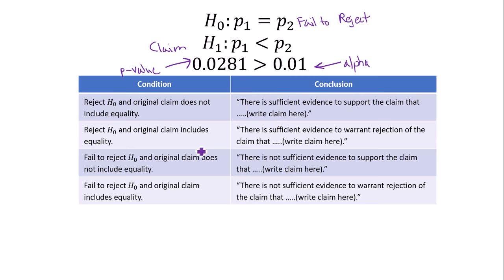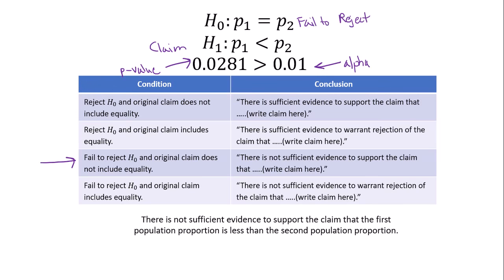So looking at our summary statement table, we failed to reject the null hypothesis. And our claim does not include inequality, which puts us in row 3. So this is the general format of our statement. So our statement is that there is not sufficient evidence to support the claim that the first population proportion is less than the second population proportion.